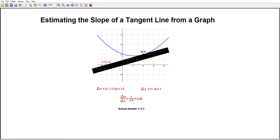The actual answer is 0.3, and I know this because I know what function this is the graph of and I know what the slope of the tangent line is here. You will notice that 0.29 is very close to 0.3, so this is actually a pretty good estimate.